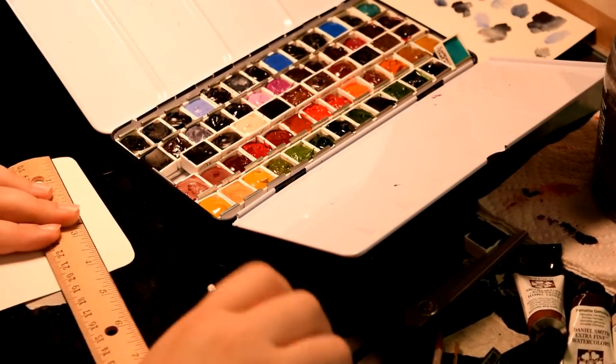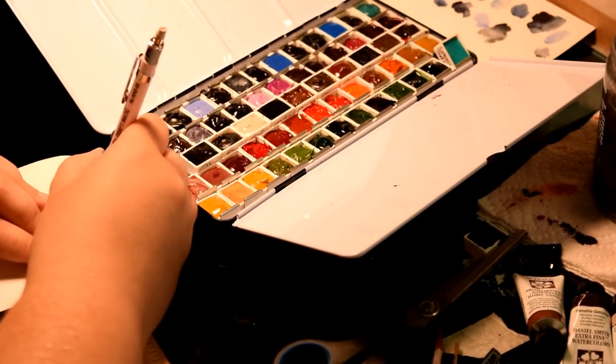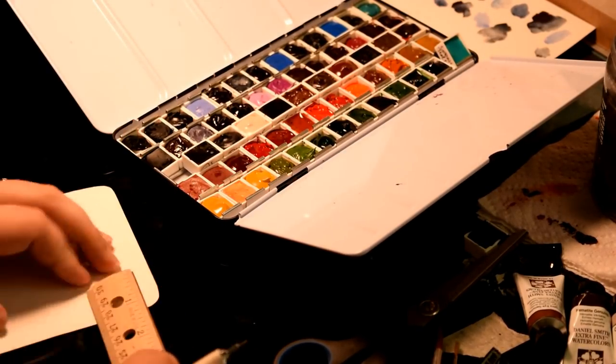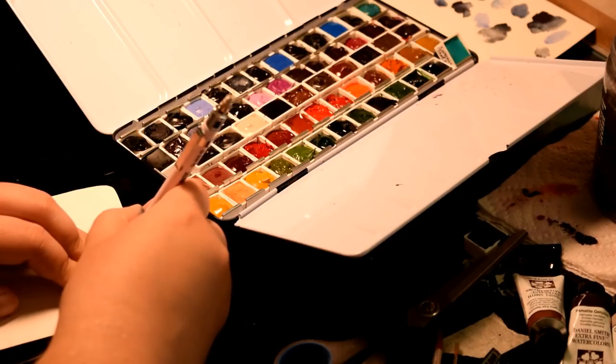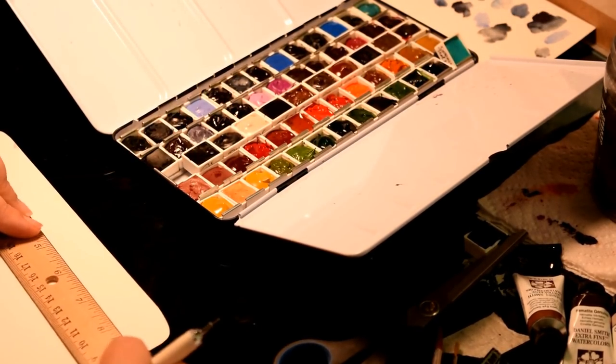At this point I started to employ some really complicated math to figure out how big to make my grid before I realized that I could literally just set it on the pan and make marks where the colors were in the palette because the piece of paper is exactly the same size as the palette.